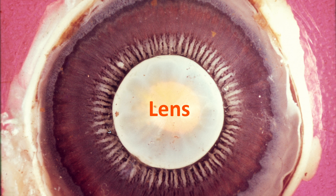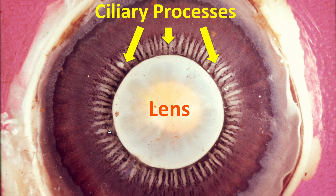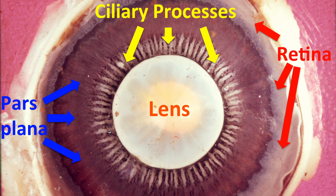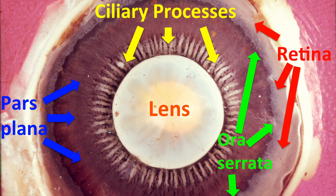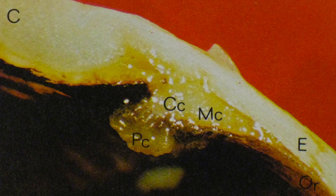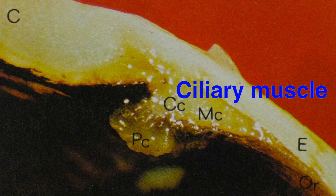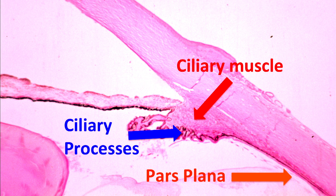In this beautiful picture made from the inside of the eye, we can see the ciliary processes, pars plana, retina, and ora serrata. In the external part of the ciliary body, we can find the ciliary muscle, as we can see in this microscopic cut.